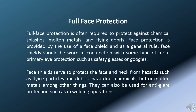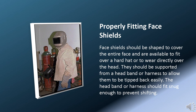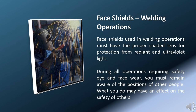Full face protection is often required to protect against chemical splashes, molten metals, and flying debris. Face protection is provided by the use of a face shield, and as a general rule, face shields should be worn in conjunction with some type of primary eye protection, such as safety glasses or goggles. Face shields protect the face and neck from flying particles and debris, hazardous chemicals, hot or molten metals, and other hazards. They can also be used for anti-glare protection, such as in welding operations. Face shields should be shaped to cover the entire face, be supported from a headband or harness to allow them to be tipped back easily, and the headband or harness should fit snug enough to prevent shifting. Face shields used in welding operations must have the proper shaded lens for protection from radiant and ultraviolet light.